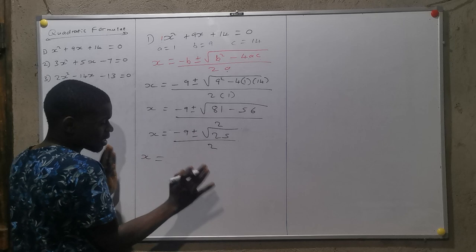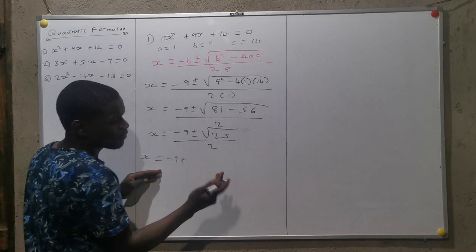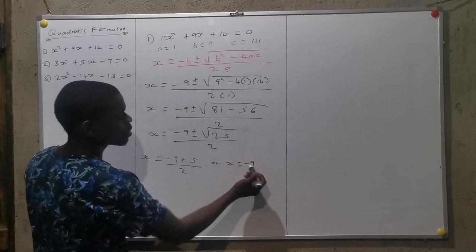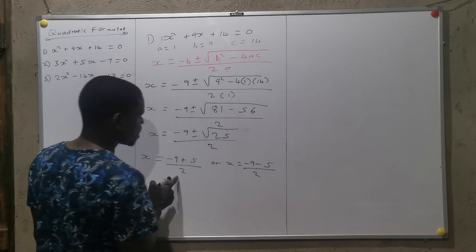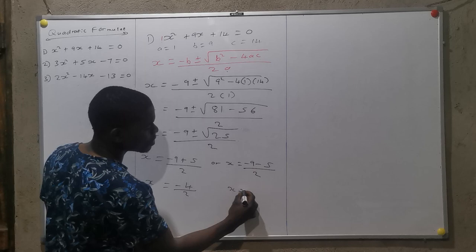I'm going to split my equation into 2. X equals - one equation with plus, one with minus. So, X is equals to minus 9 plus the square root of 25, which is 5, over 2. Or X is equals to minus 9 minus the square root of 25, which is 5, over 2.